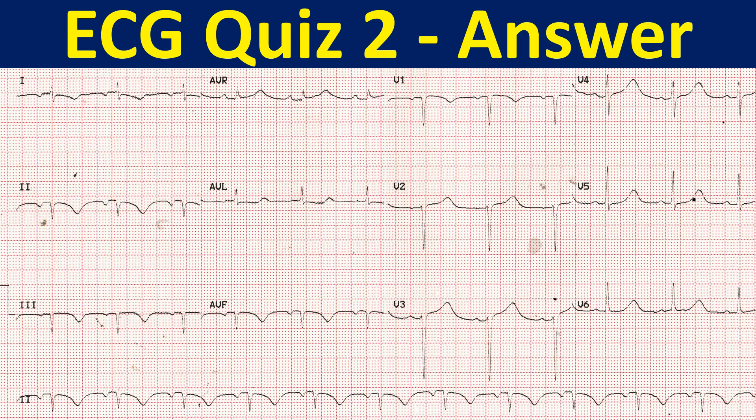Such an ECG is usually misdiagnosed as inferior wall infarction unless one is careful to go in a sequential manner, starting from the P wave as is usually taught in ECG lessons. It is easy to confirm the lead reversal by recording an ECG under direct supervision.